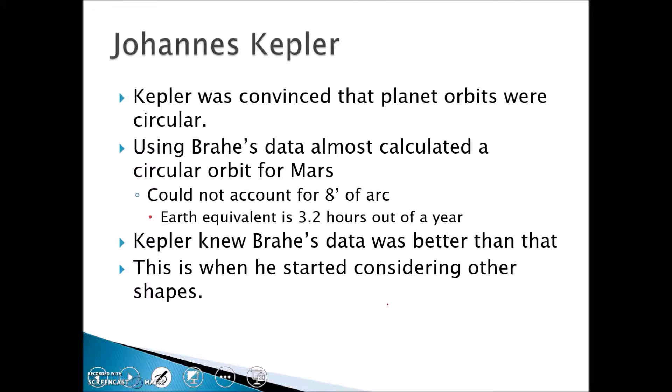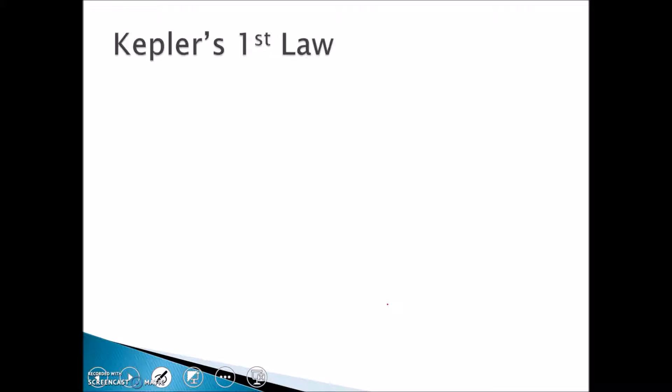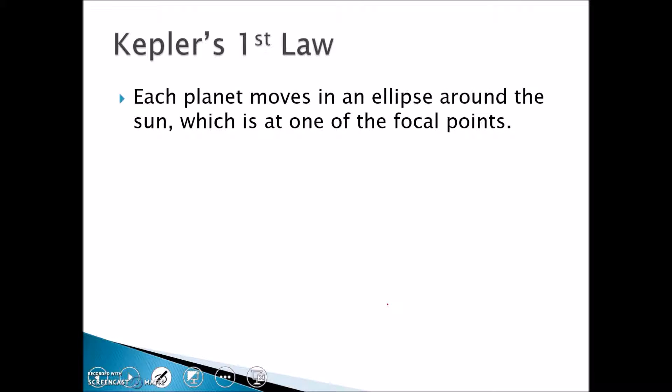That's when he got into the ellipse. This is something that he developed - it took him years to come to this conclusion. Kepler's first law is pretty simple: each planet moves in an ellipse around the sun. The sun is located at one of the focal points of the ellipse. This is why we talked about the ellipse a little bit a few minutes ago.